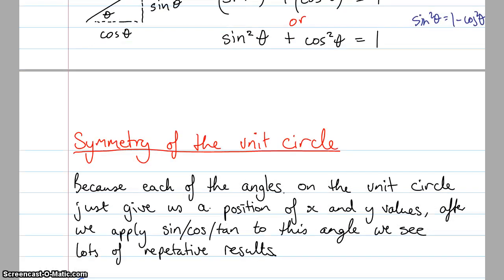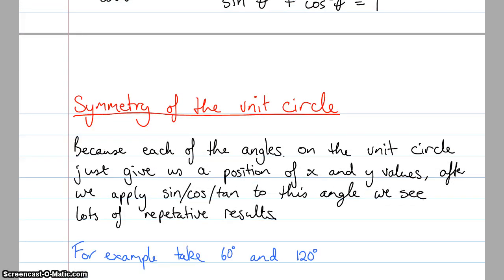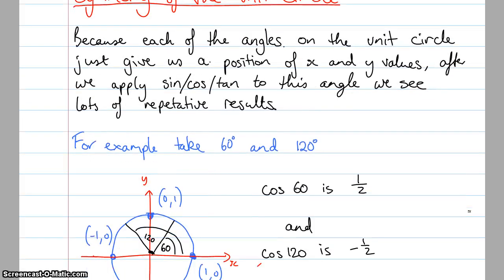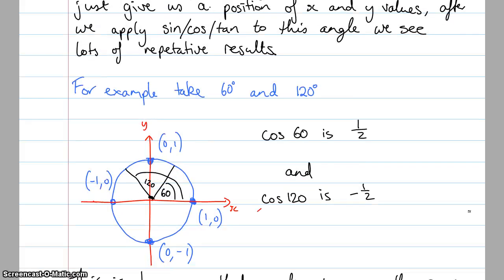The next thing that we need to know is about the symmetry of the unit circle. Each of the angles of the unit circle just gives us a position of x and y values. And after we apply sine, cos, or tan to this angle, we see lots of repetitive results. For example, if it takes 60 and 120, cos of 60, if I do this on my calculator or using my special triangles, I know that cos of 60 is a half.